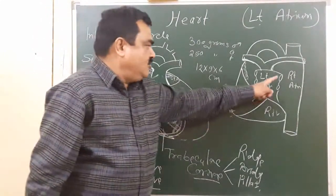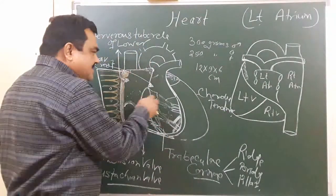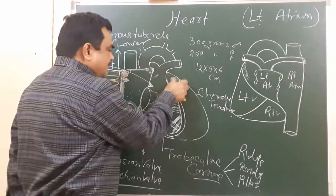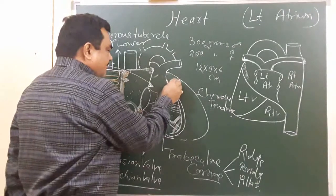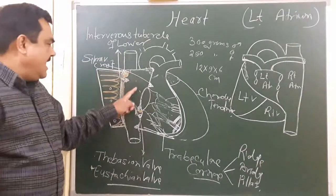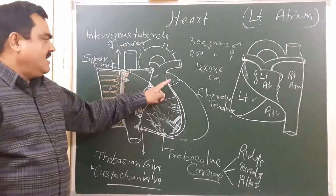There are four openings as you have seen. If you open this chamber, you will find small veins. These are the venae cordis minimae, like in the right atrium.